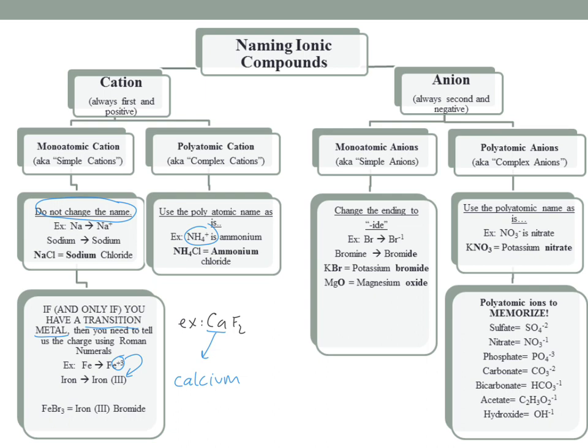Now for the anions, it's a little more complicated. For monatomic anions — ones that are just one single atom with a charge — you do need to change the ending to '-ide.' That means oxygen becomes oxide, fluorine becomes fluoride, sulfur becomes sulfide, iodine becomes iodide, etc.